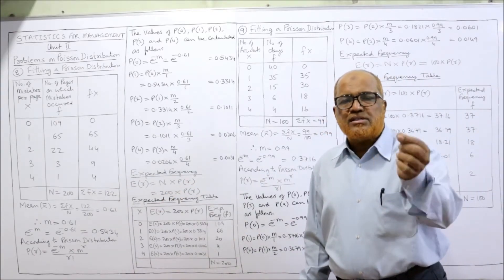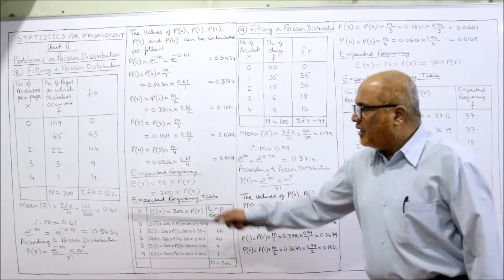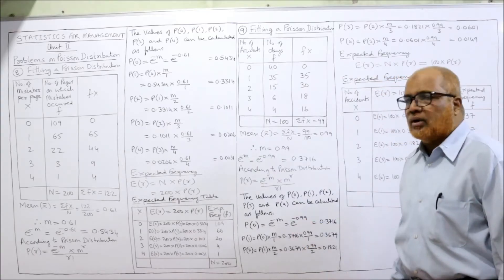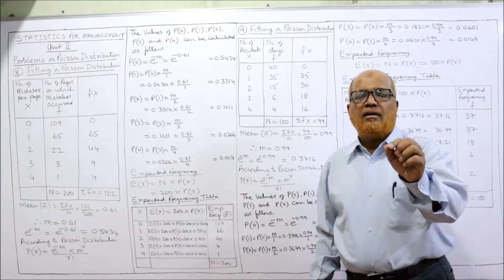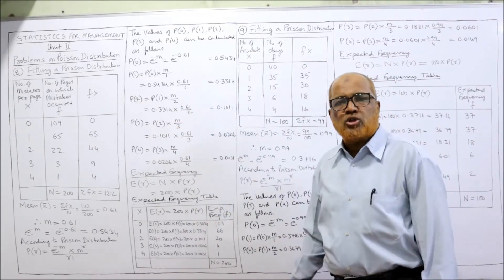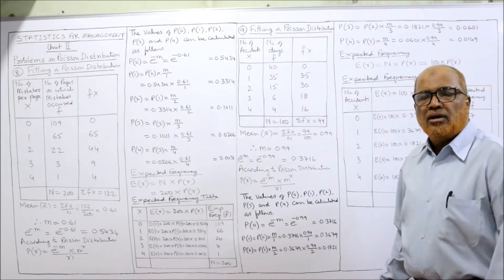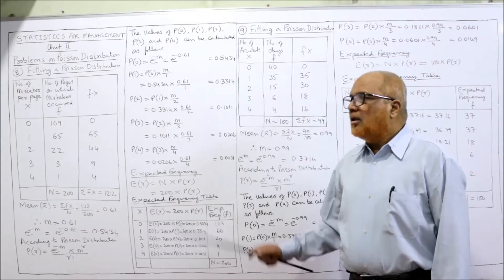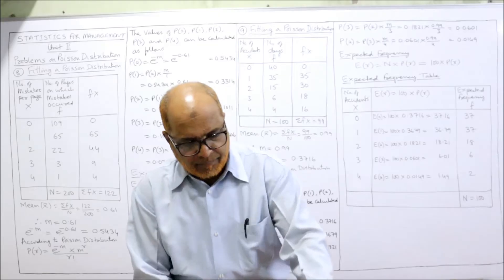The total of actual frequency and the total of expected frequency must both be 200 — and here both equal 200. This is the problem called fitting of Poisson distribution — finding expected frequencies. This type of problem is frequently asked in examinations. Now let's move to the ninth problem.